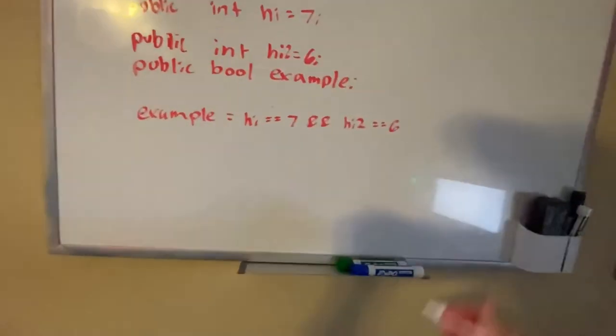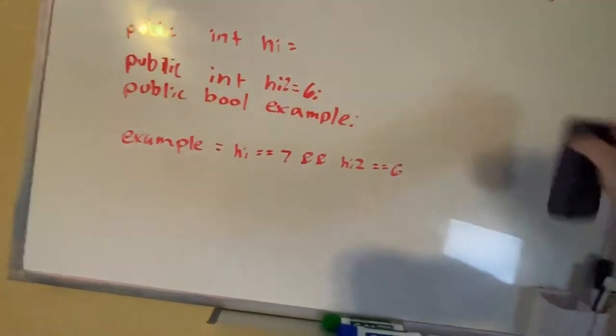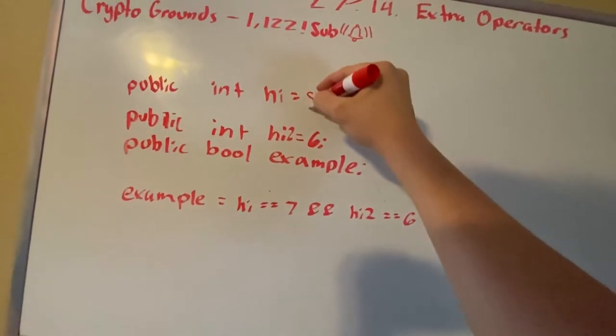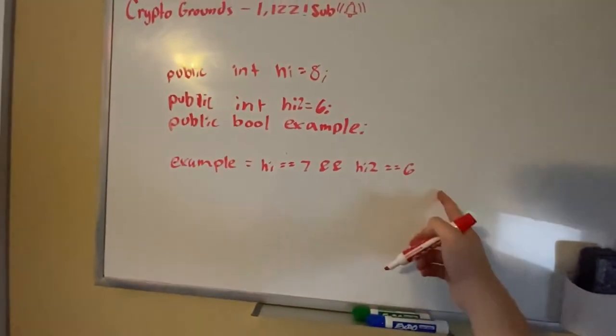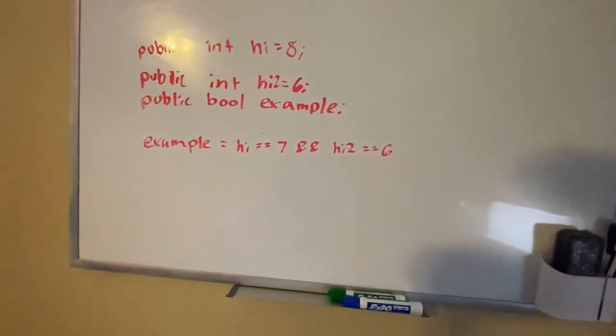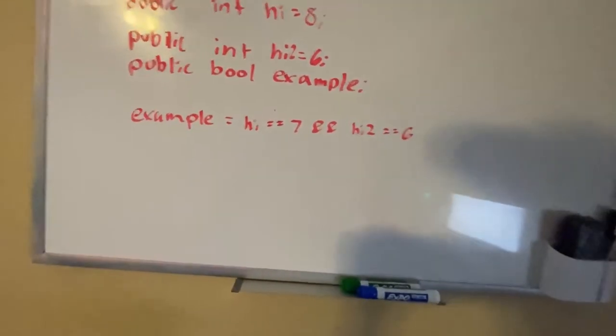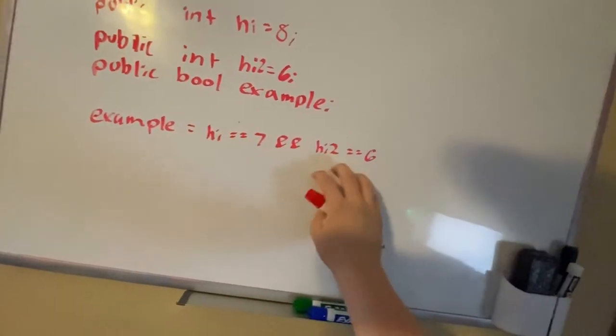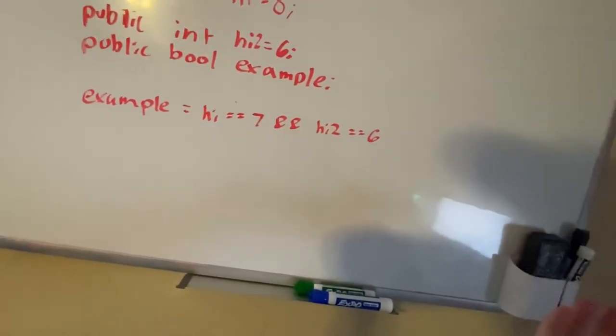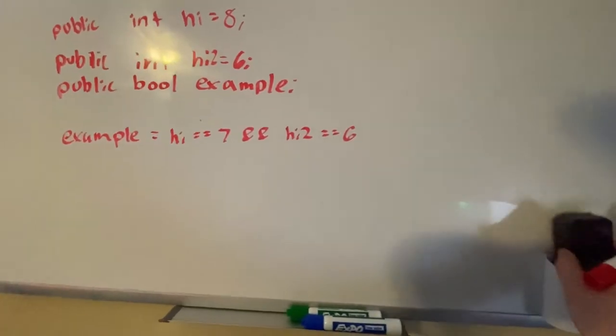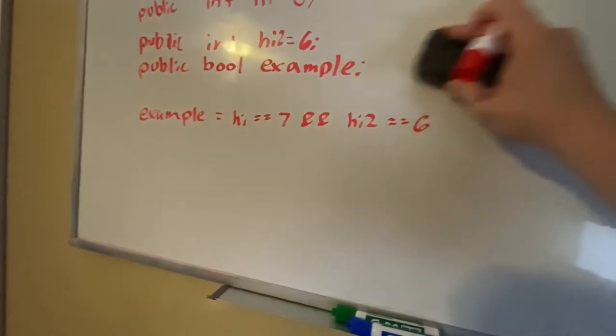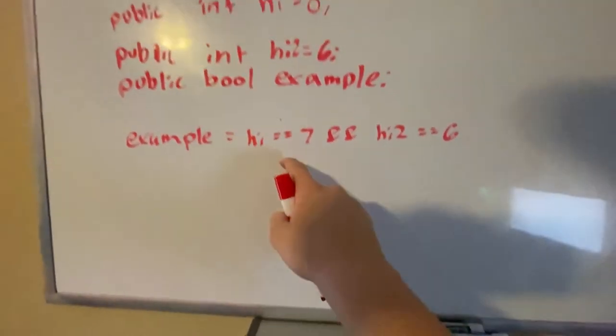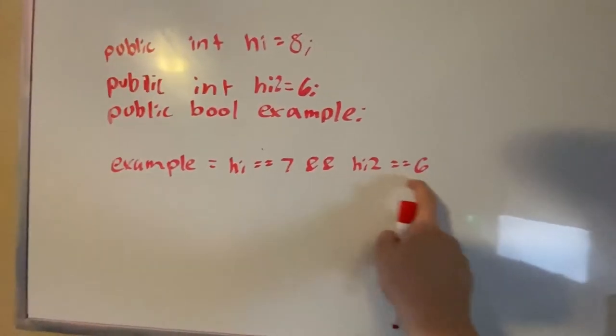Let's say one of them isn't equal to that. Let's say high is equal to eight. So now this statement's false because this one's false, this one is true. And basically this AND statement, it checks for the first one first, so if this is false, it won't check for this one because it's automatically false, right?